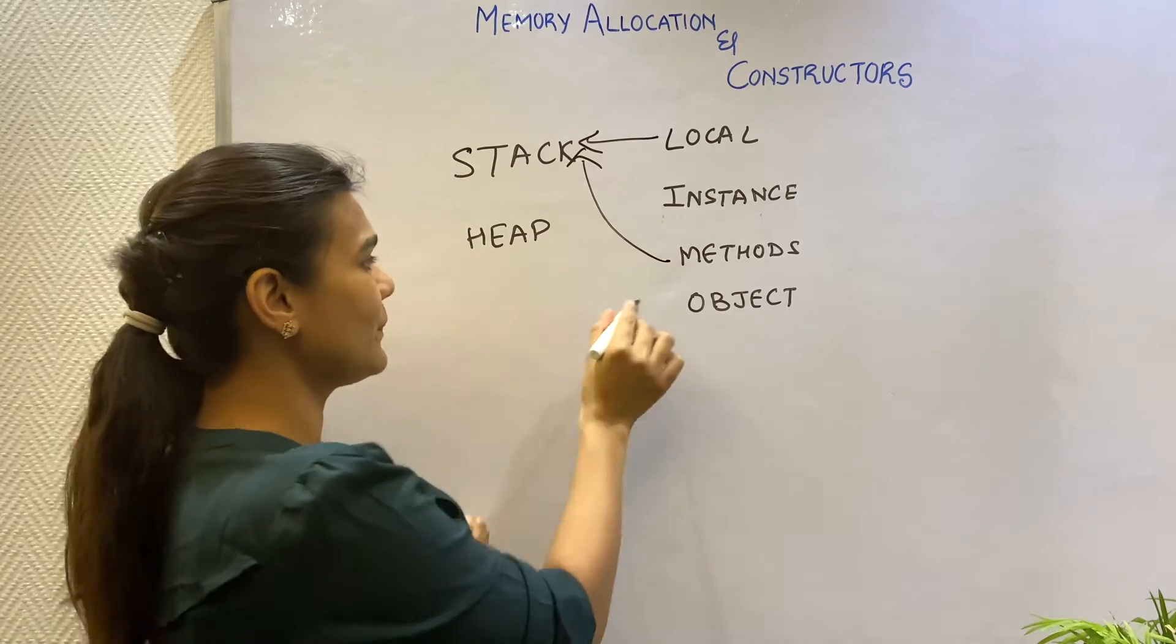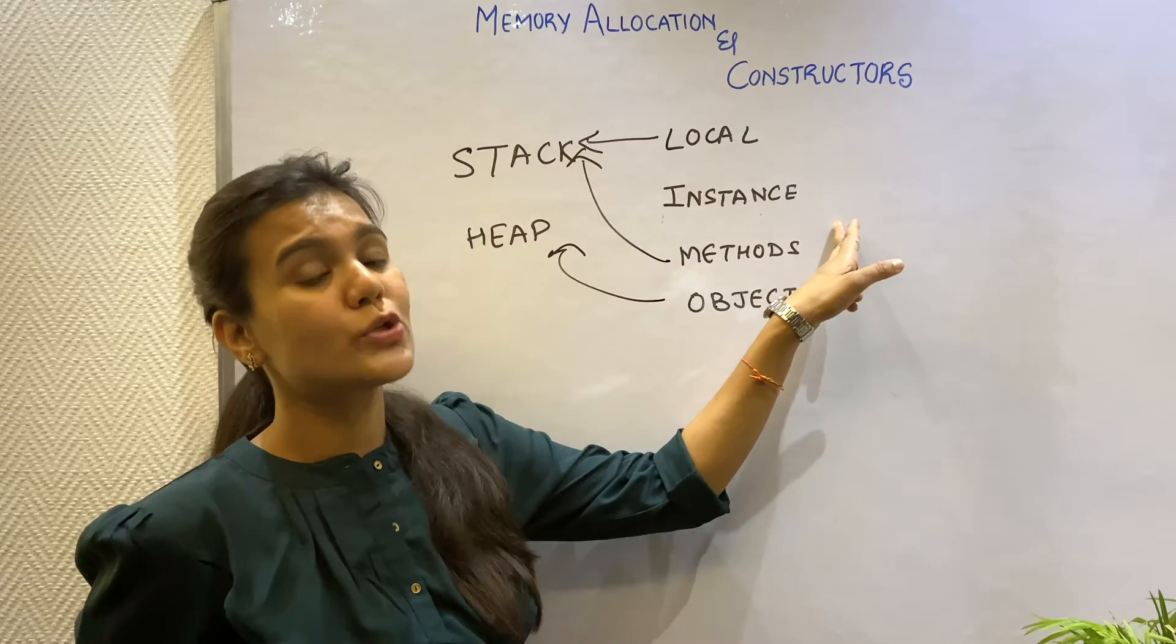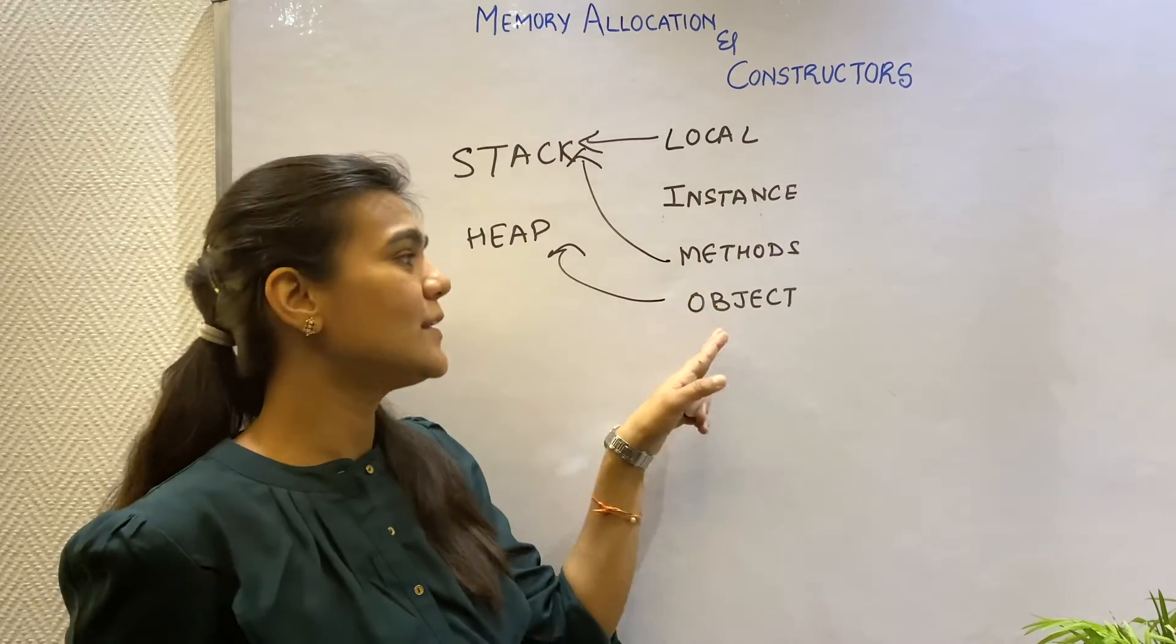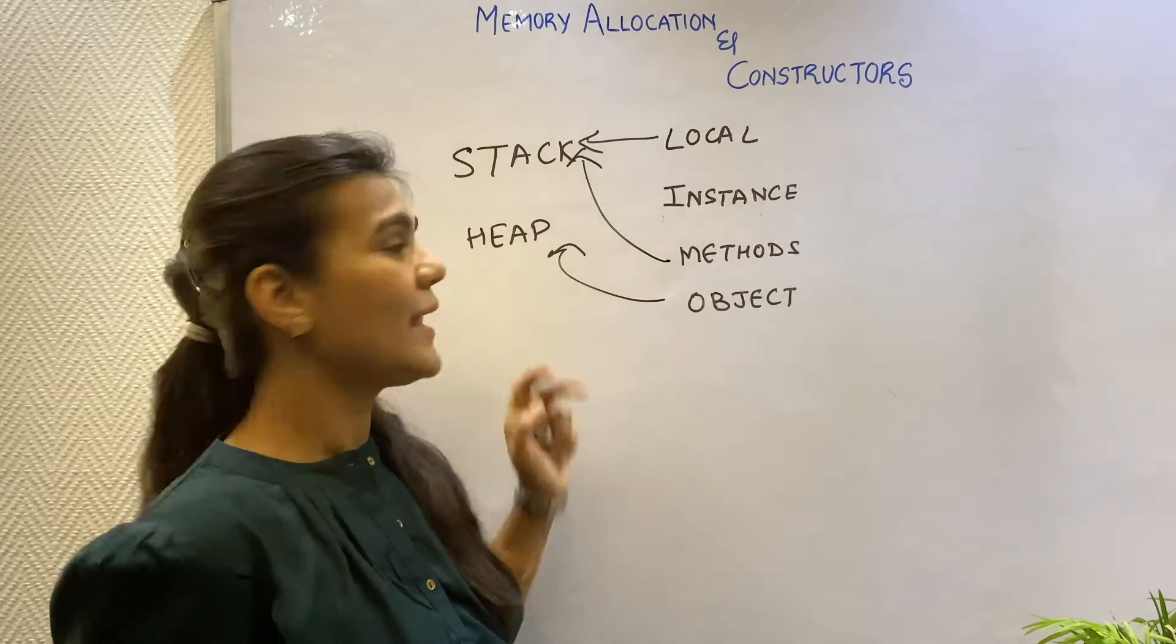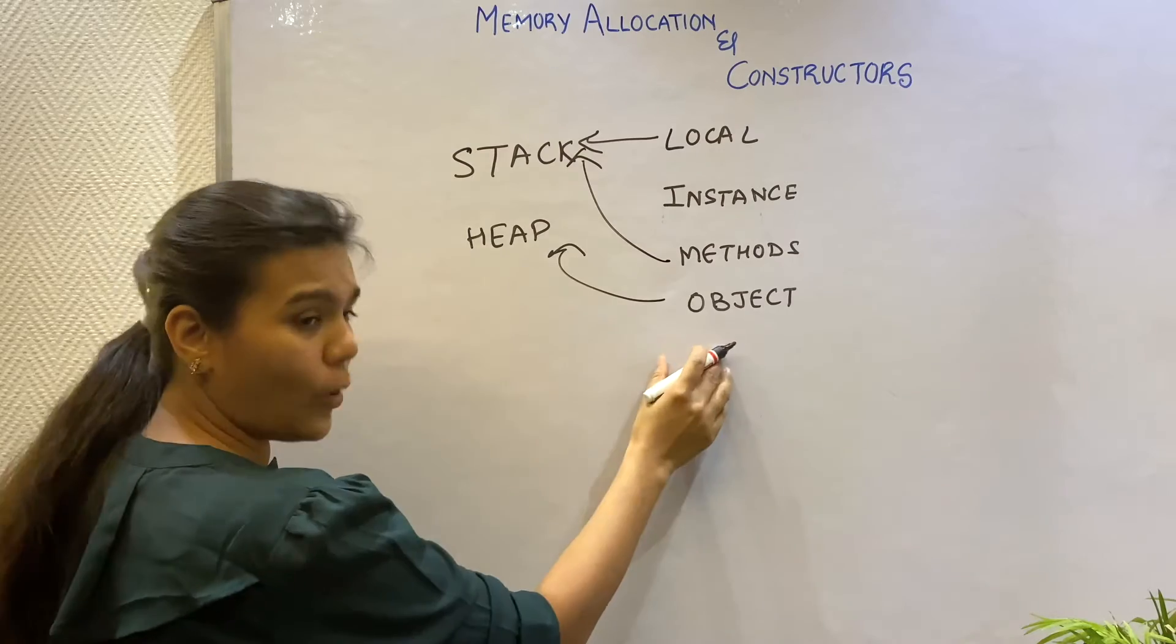Objects live on the heap. And since we know that instance variables belong to their respective objects, the instance variables live inside the object on a heap. And let's see how the memory is allocated on a heap to an object.